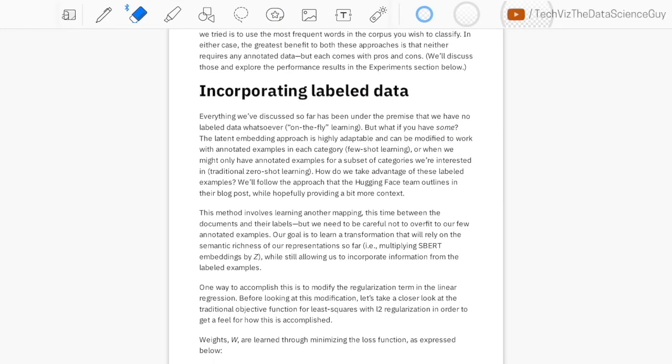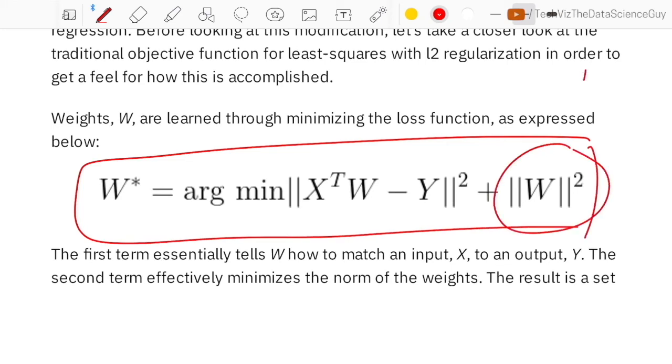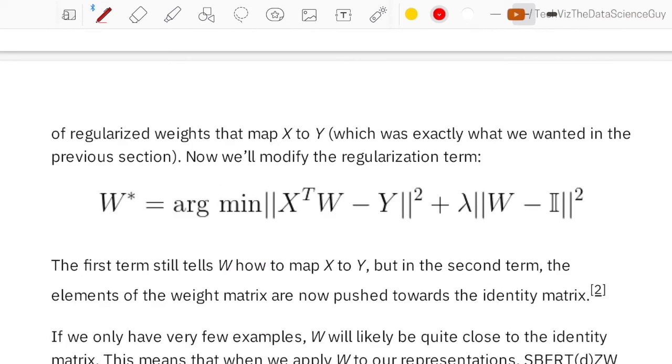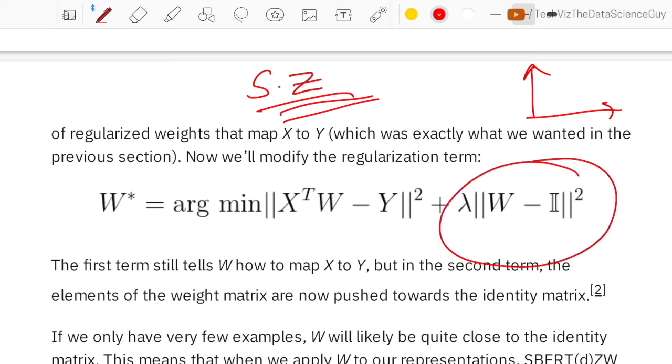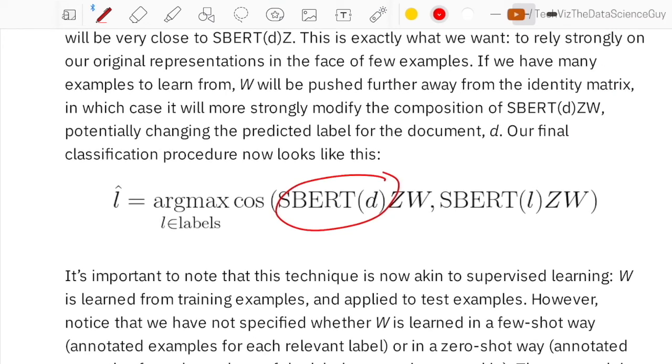Now talking about if we have a bit of labeled data present with us, then how do we extend the existing techniques while also leveraging some of the extra supervised information. This is a typical linear regression equation with the L2 regularizer, where the idea of W is to push this X to its label Y. But what the authors strongly believe is that the representation they've got, which is sentence BERT multiplied by the ZMAP representation, which takes them to an all new hyperspace, is already good enough. So now if they want to incorporate a bit of labeled data, they don't want it to overpower the initial representation.